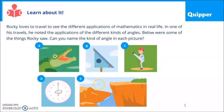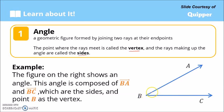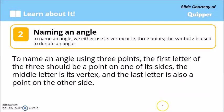An angle is a geometric figure formed by joining two rays at their endpoints. The point where the rays meet is called the vertex, and the rays making up the angle are called the sides. In this example, this angle is composed of ray BA and ray BC, which are the sides, and point B is called the vertex.